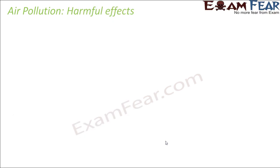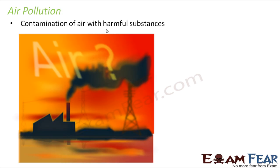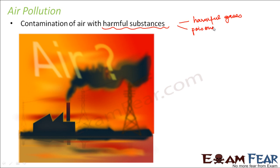Now what are the harmful effects of air pollution? First, what do we mean by harmful substances? When some undesirable or harmful substances are present in the air, they can be harmful gases which we do not want to inhale, or poisonous particles — small, tiny particles which are extremely poisonous. It could also be some biological molecules. So it could be gases, particles, molecules — anything.